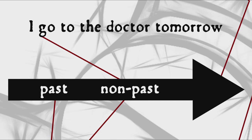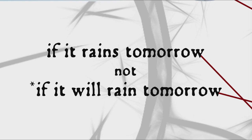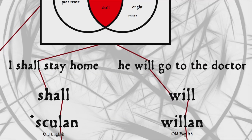We can still do this in modern English, like saying, 'I go to the doctor tomorrow.' And in subordinate clauses we never use the future tense — as in 'if it rains tomorrow,' never 'if it will rain tomorrow.' But if we want, we can specify that the action of a verb is in the future by using auxiliaries such as will and shall, as in 'I shall stay home' or 'he will go to the doctor.'